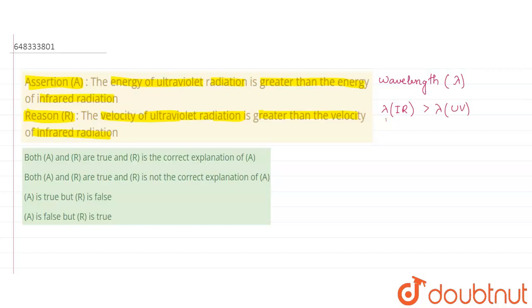Now if these are like this and if we consider that the relation of lambda with energy, then we will find that if we consider energy to be E, then E is inversely proportional to lambda. That is, E is proportional to 1 by lambda. And hence we can say from here that the energy of UV is greater than the energy of infrared.